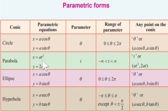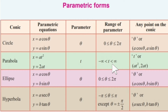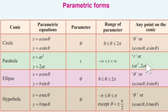Next, for the parabola, the parametric equation is x equal to a t square and y equal to 2 a t. Here we have considered t as the parameter. The parameter t value lies between minus infinity to plus infinity. Any point on the parabola is of the form a t square, 2 a t, representing the x and y coordinates.